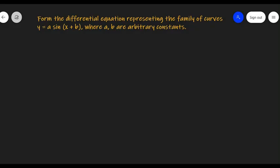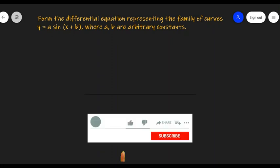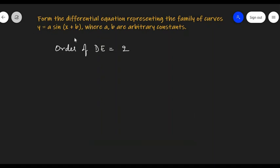In this video, let's form the differential equation representing the family of curves y = a·sin(x + b), where a and b are arbitrary constants. We know that the number of arbitrary constants determines the order of the differential equation, so here the order of the resulting differential equation is going to be 2. We need to differentiate this given equation 2 times in order to get the differential equation.